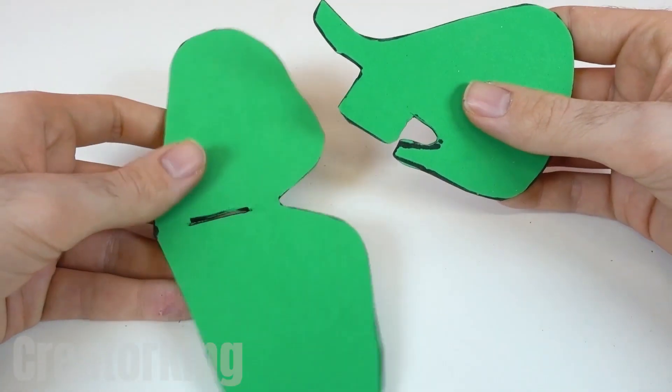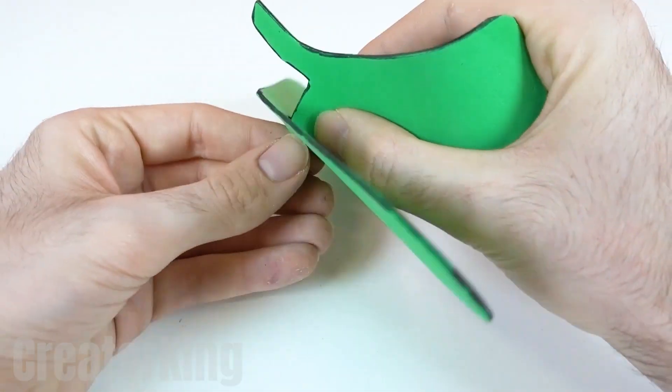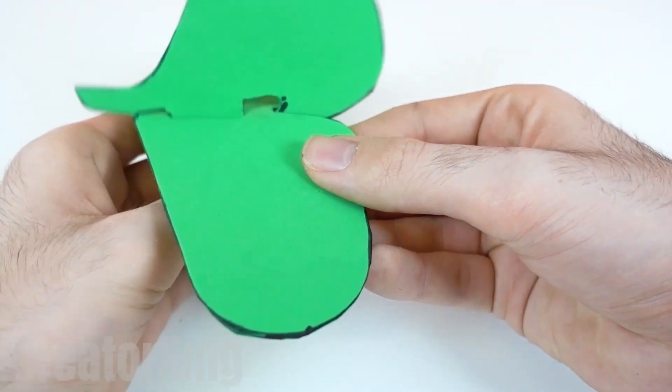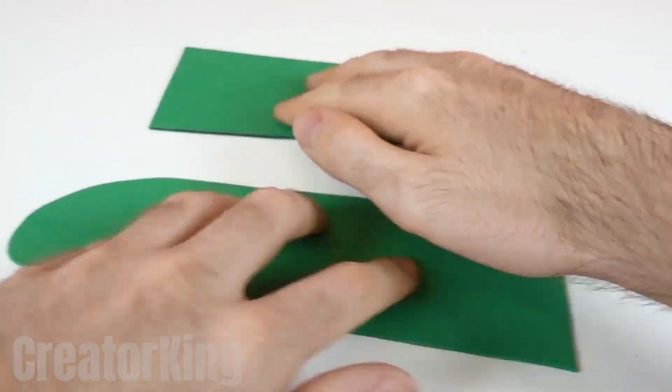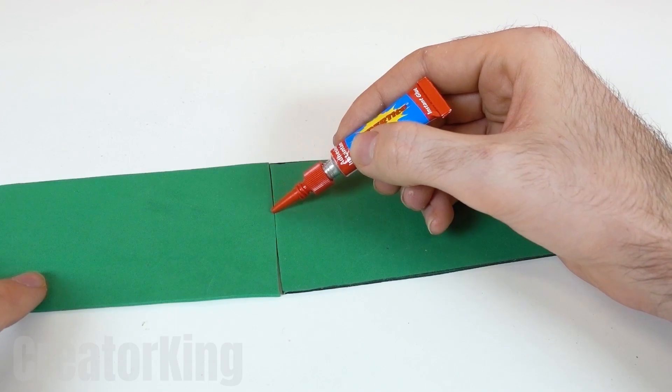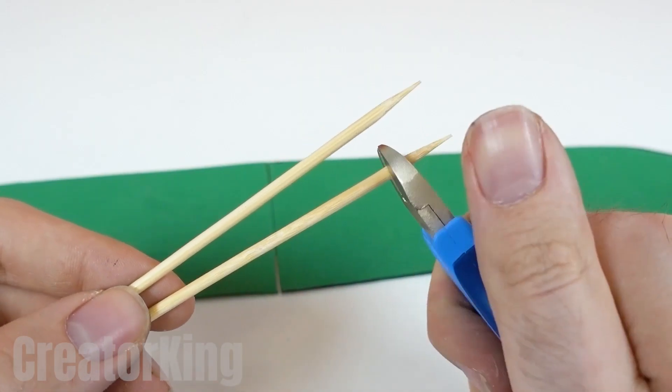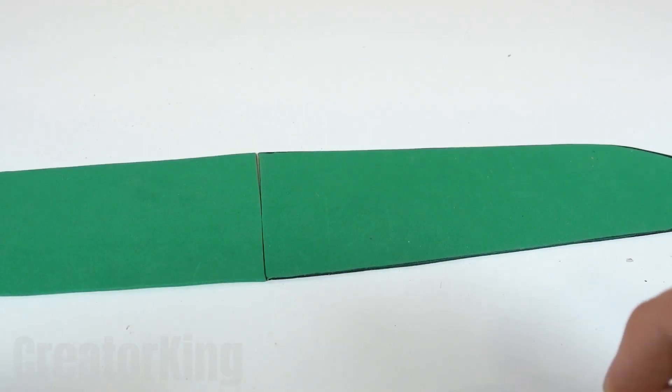Once cut out, begin to assemble the pieces following the order that you see on the screen. By the way, the material you see here is nothing more than foam. Did I mention that I worked for a stationery store? Glue the straight ends of the wings together and cut the ends off of several sticks in order to glue them to the structure for support.